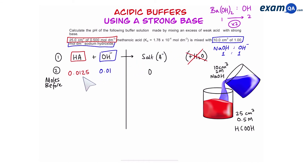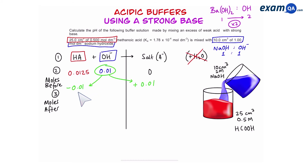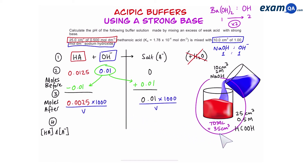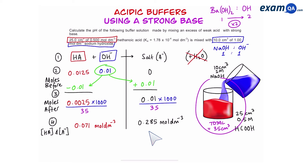Once we have the moles before the reaction, we want to know how many moles we have after the reaction. Since hydroxide is always the limiting reactant, we subtract it from the weak acid and add it to the salt — and these are the moles after the reaction. Next we convert these moles into concentration using: moles × 1000 ÷ volume = concentration. Because the two solutions are mixed together, the total volume is 35 cm³, so we divide by 35 to get the final concentrations of HA and A⁻.